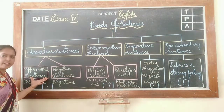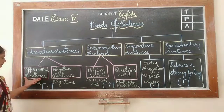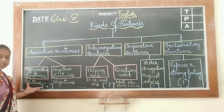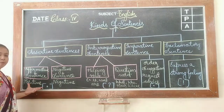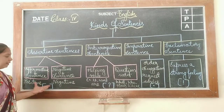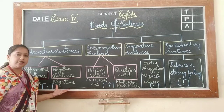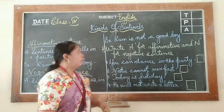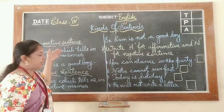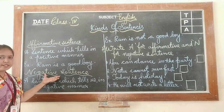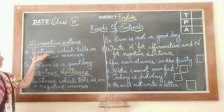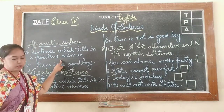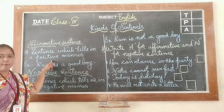Assertive sentences are of two types: affirmative sentence and negative sentence. An affirmative sentence tells something in a positive manner. A negative sentence tells something in a negative manner.